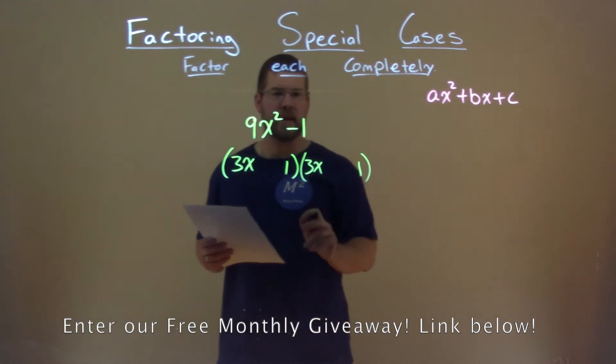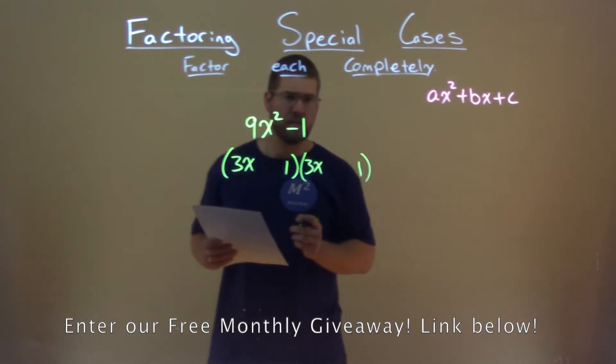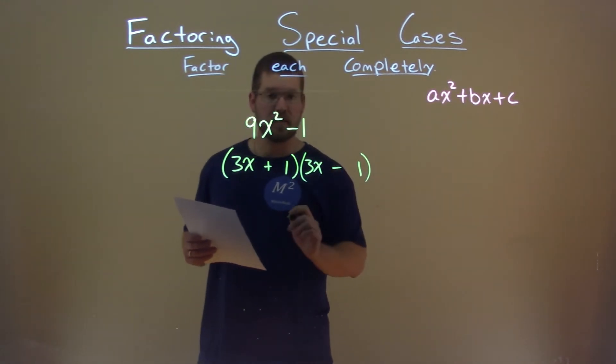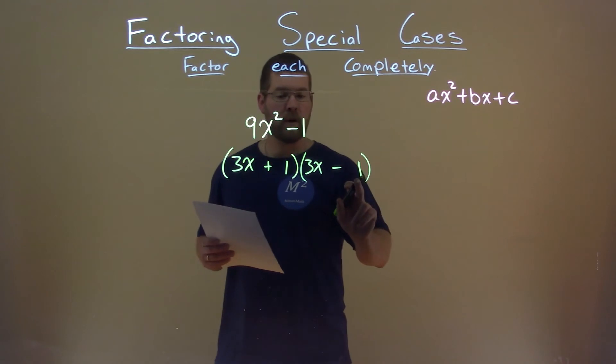So now we have to look about the inside. Well, our b value is 0, right? So that means if I have this as a positive, and this is a negative, 3x times a negative 1 is a negative 3x.